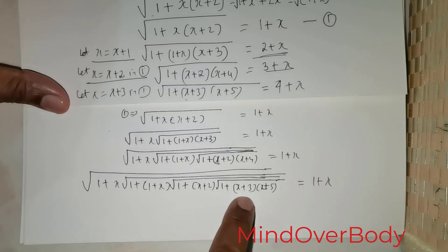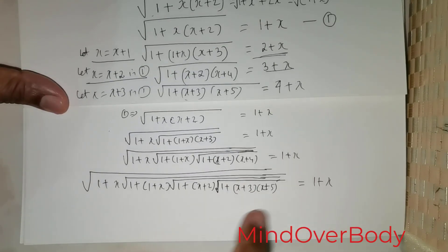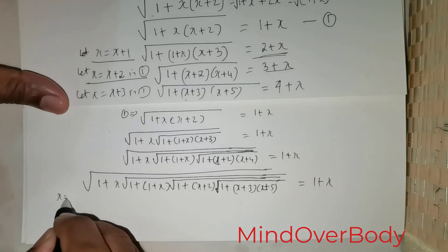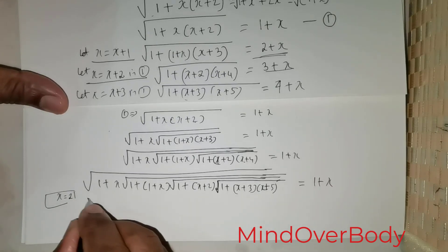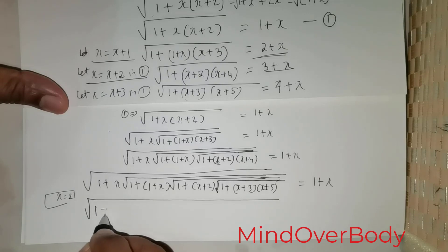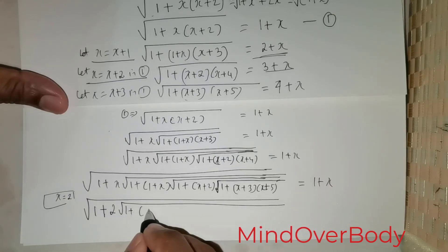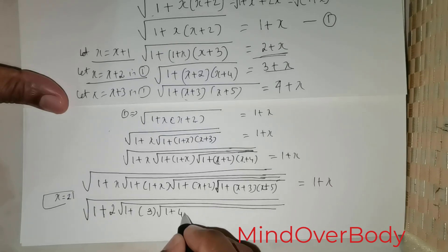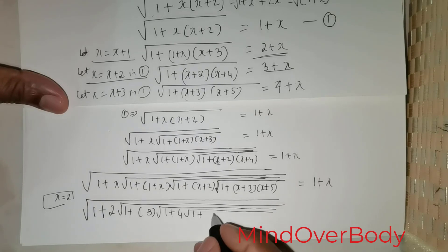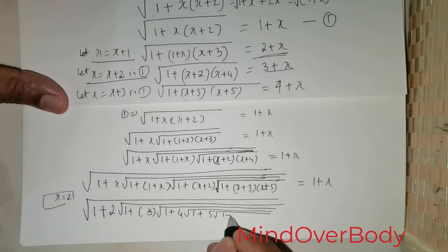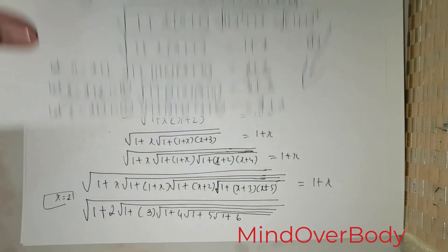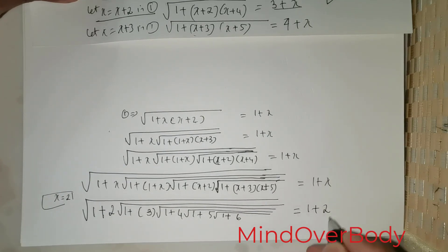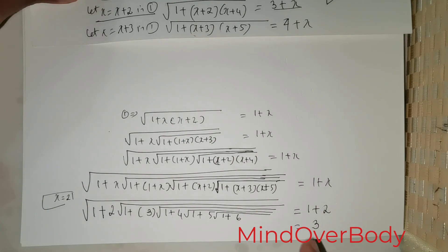The most important part: if I take x equal to 2, this will produce the same nested radical proposed by Ramanujan. So taking x = 2: the radical becomes 1 + 2 times root of 1 + 3 times root of 1 + 4 times root of 1 + 5 times root of ... and on the right-hand side, 1 + x with x = 2 gives 1 + 2 = 3. This is exactly the solution the radical required.